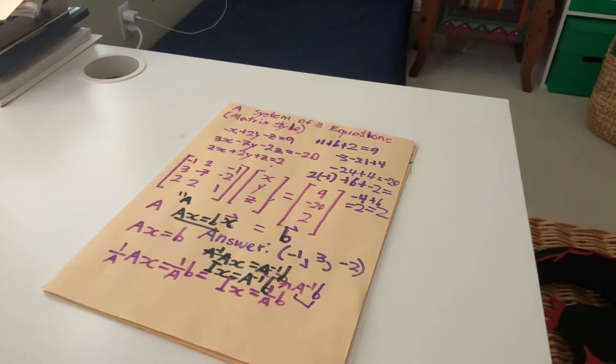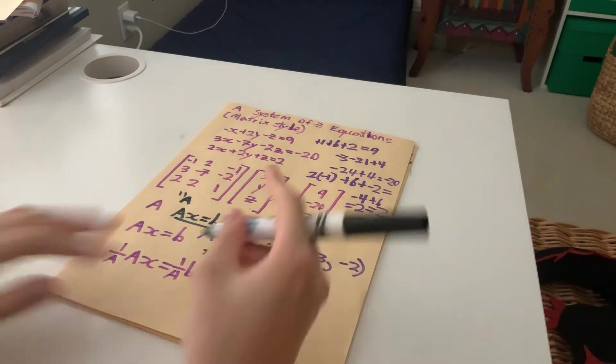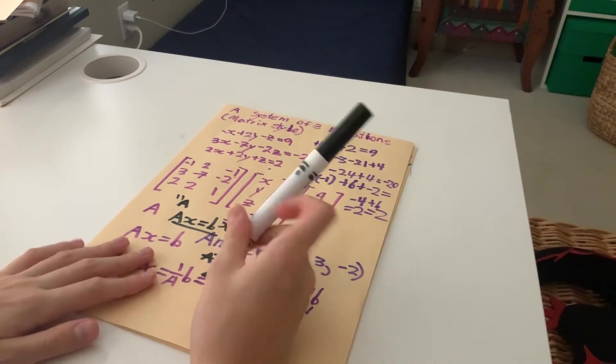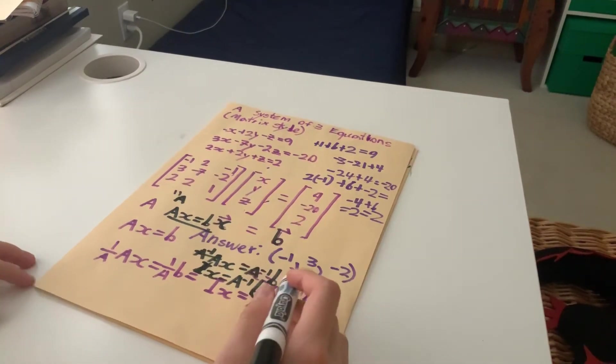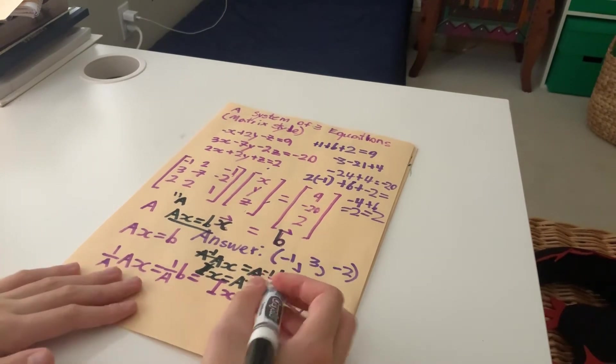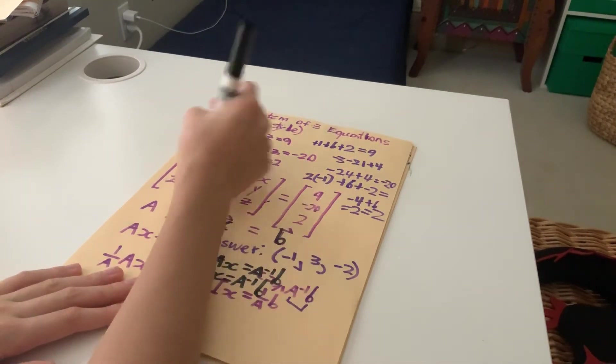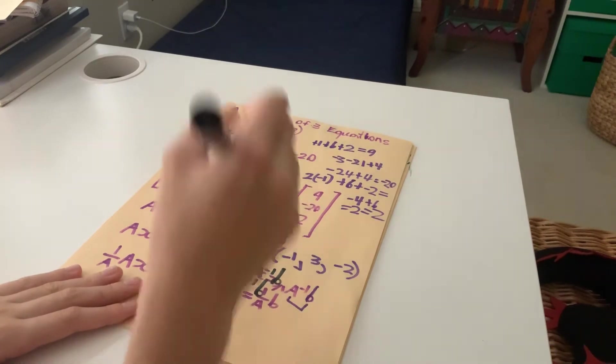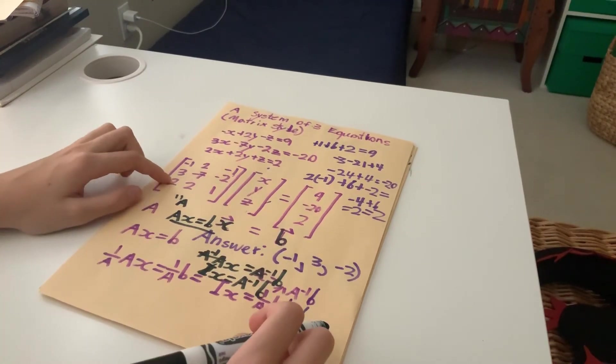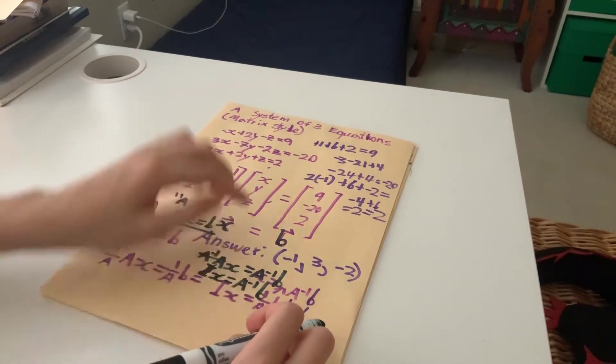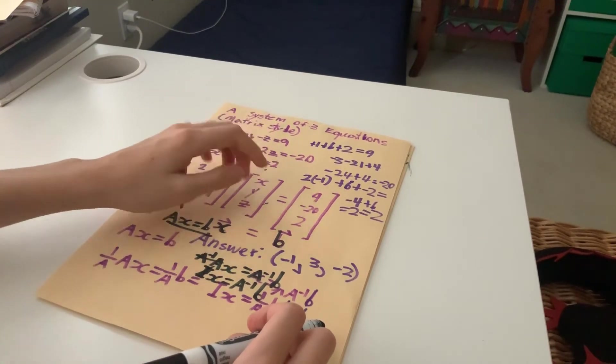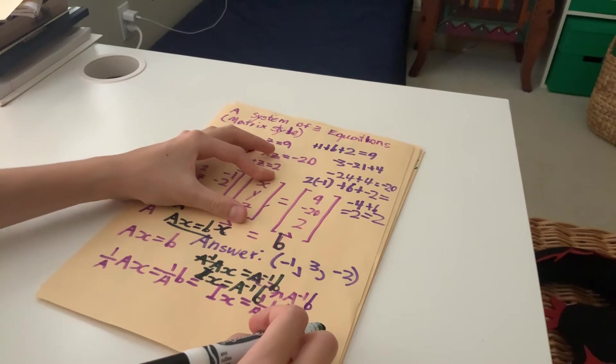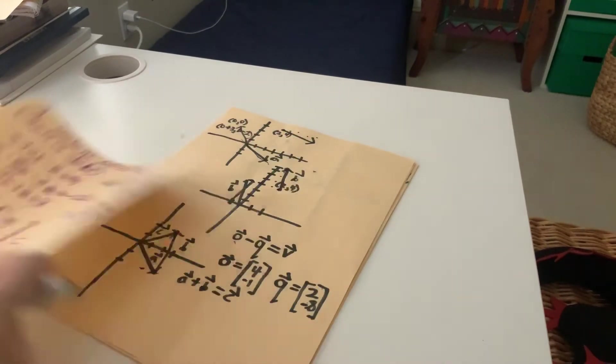And then all you have to do is solve for this. A inverse times B. And again, I'm not going to go through the whole process of inverting a 3x3 matrix. But all you have to do, obviously, any identity matrix multiplied by x is just x. But all this is, is just you find the inverse of this matrix, A. Then you multiply it in this format by B, which is this. And this is x. So, you get all your solutions for x, y, z.